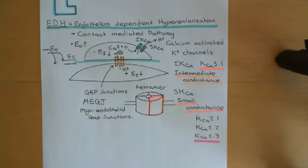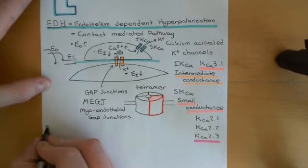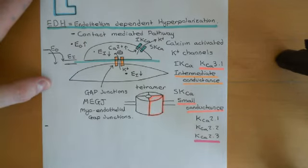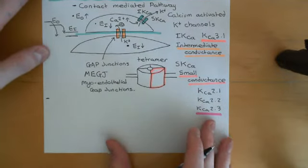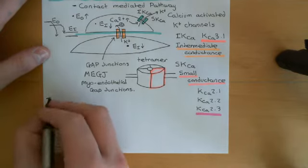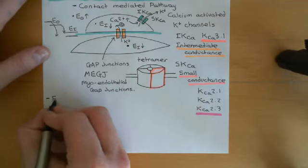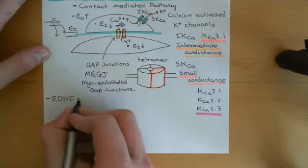We've just looked at the contact-mediated pathway of endothelium-dependent hyperpolarization. We're now going to look at the other pathway prevailing amongst all the pathways discovered associated with this phenomenon. This other mechanism involves a diffusible factor released by the endothelial cells which causes hyperpolarization of the vascular smooth muscle cells, and this is known as endothelium-derived hyperpolarizing factor, EDHF.